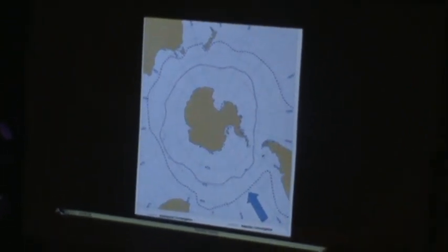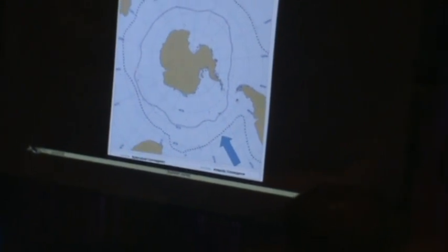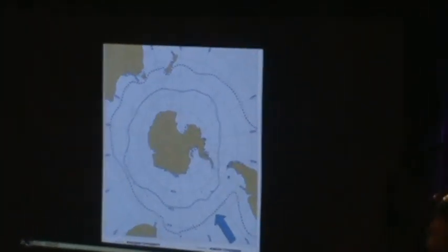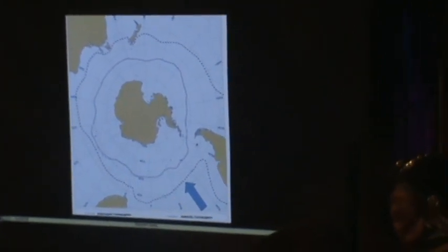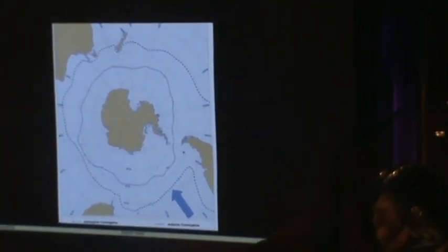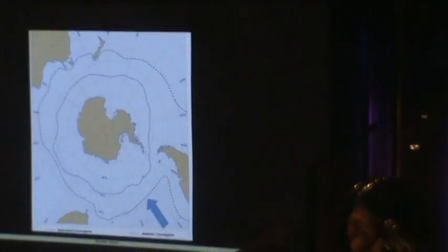And because there is no land getting in the way here, we have a circumpolar current, which has a lot of impact on what can live here, how food is distributed, but it also affects things like wave height and the weather that we'll encounter.